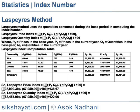The Laspeyres price index calculates the changes in the aggregate value of the base year's list of goods when valued at current year's prices. The Laspeyres method index number is simpler in calculation and can be computed once the current year's prices are known, using the base year quantities as weights. This also enables easy comparability of one index with another.